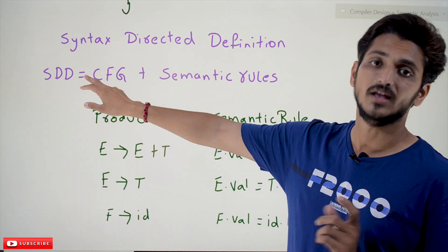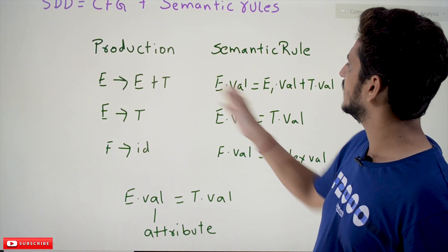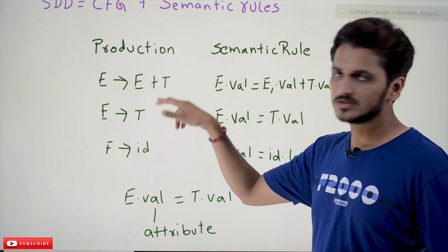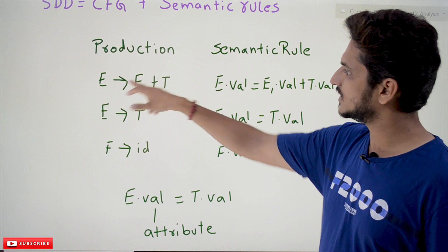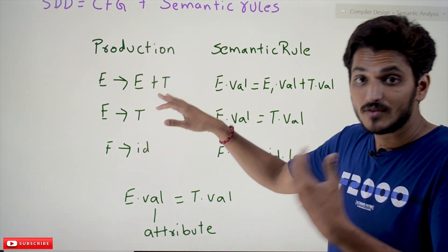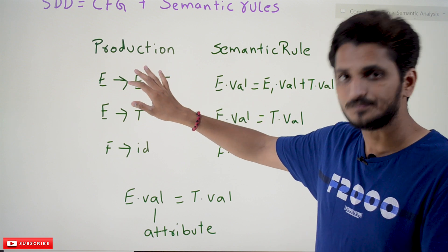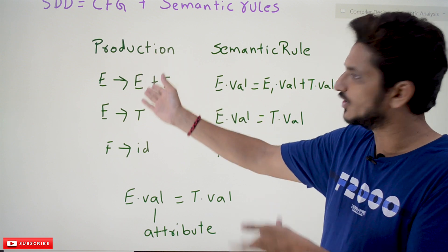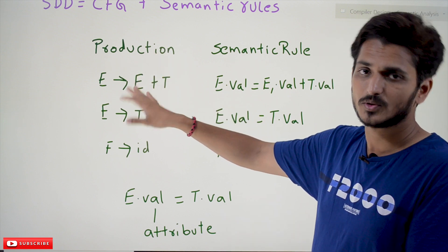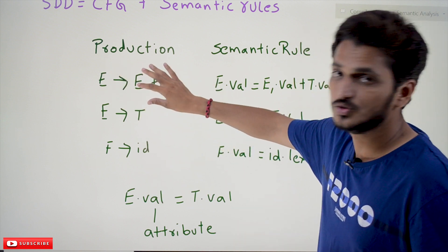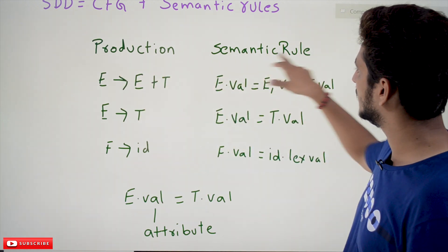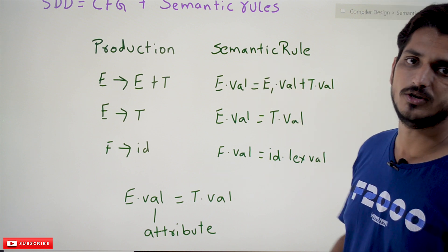How do we write that? Let's take an example. This is the production we are using in our expression grammar: E tends to E plus T. Whenever it is going to expand this expression, if you are using a top-down approach it will expand, if you are using bottom-up approach you are going to reduce.